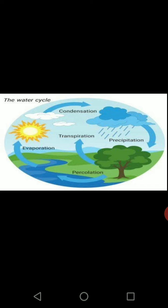In the water cycle, whatever amount of moisture or water present on the earth's surface gets evaporated. Through plants it is transpiration, driven by the sun's heat. When all the water vapor evaporates, it changes into the form of water vapor. These water vapors, after condensation, cool down and come down in the form of precipitation.